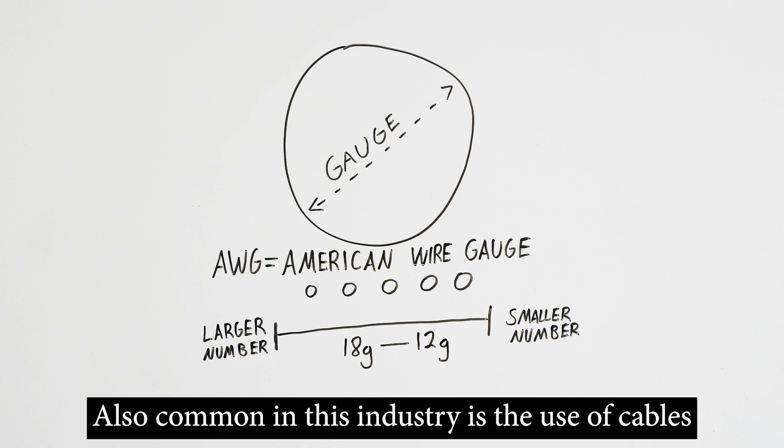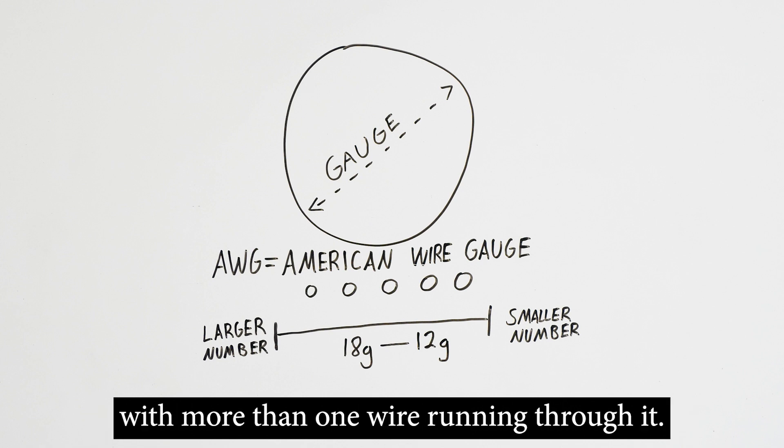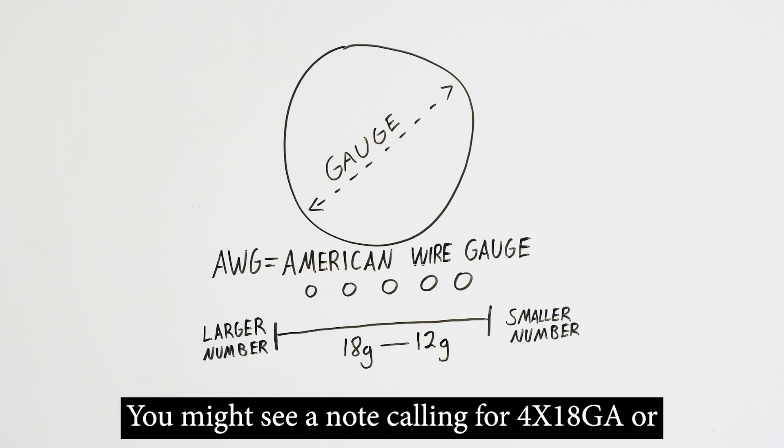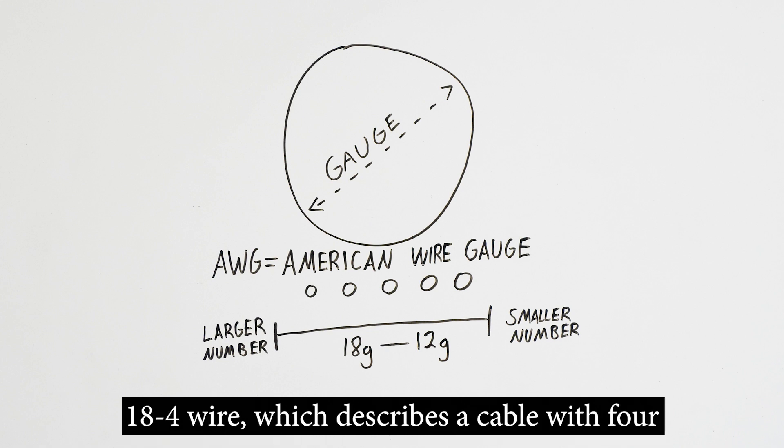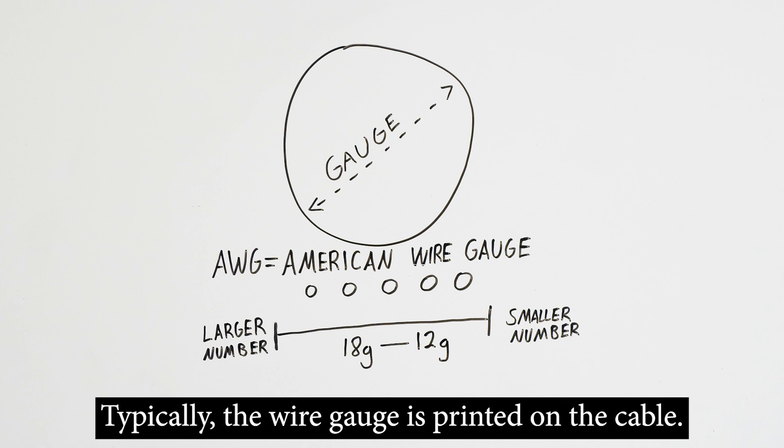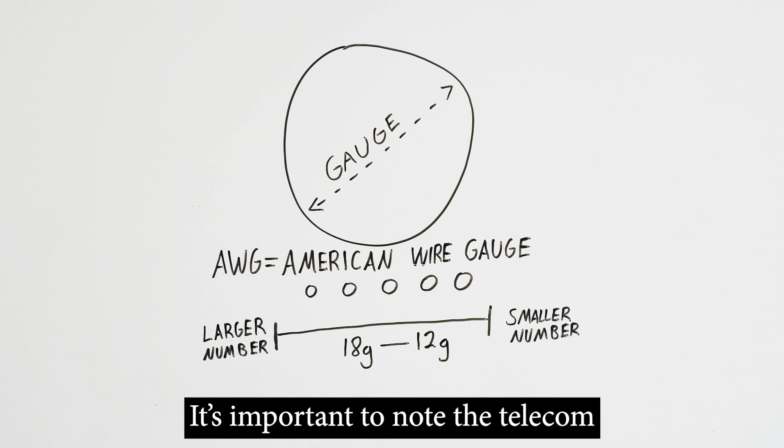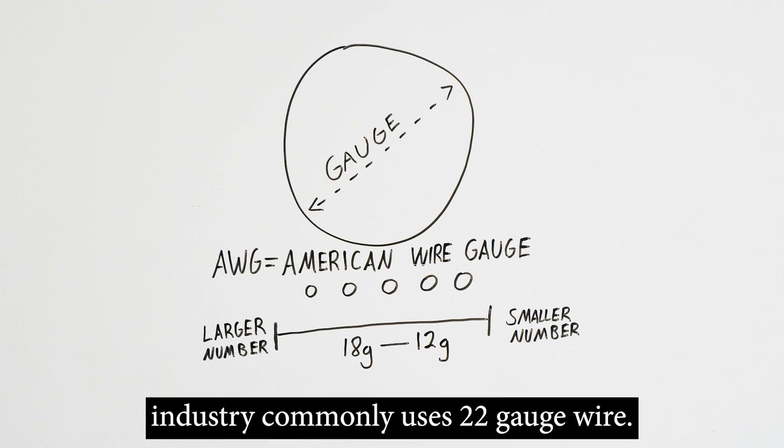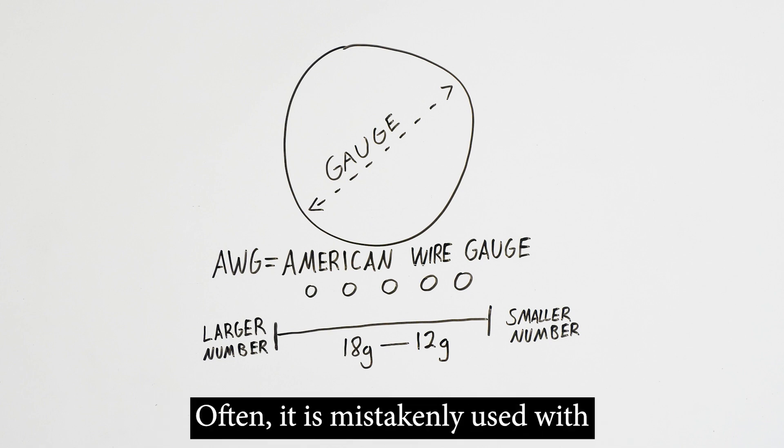Also common in this industry is the use of cables with more than one wire running through it. You might see a note calling for 4x18 gauge or 18-4 wire, which describes a cable with four separate 18 gauge conductors running through it. Typically, the wire gauge is printed on the cable. It's important to note the telecom industry commonly uses 22 gauge wire. Often, it is mistakenly used with our products, with bad results.